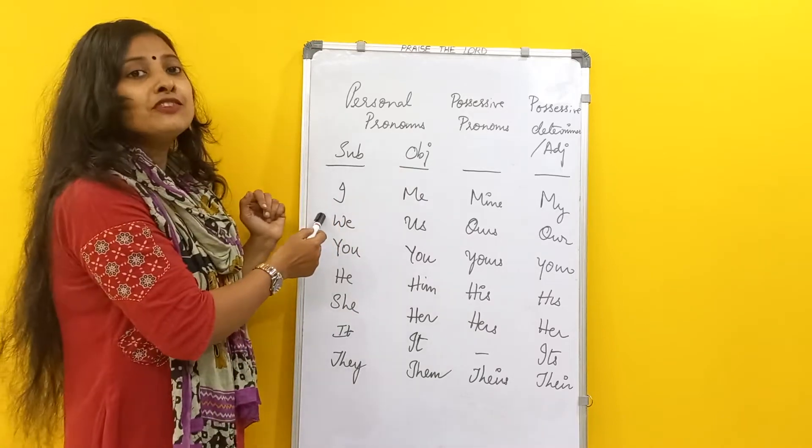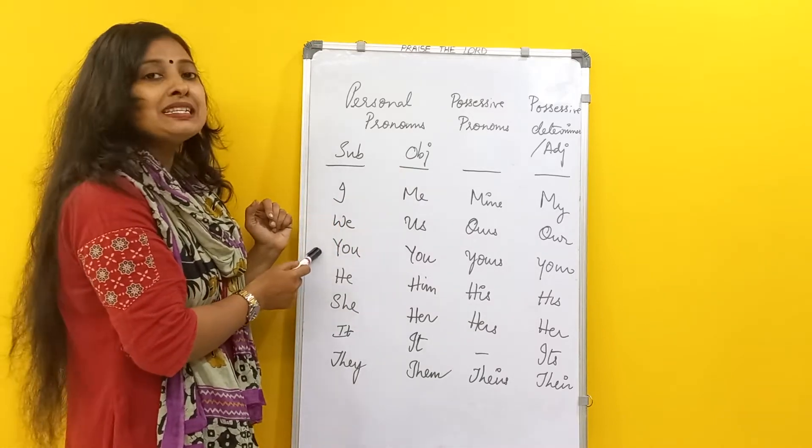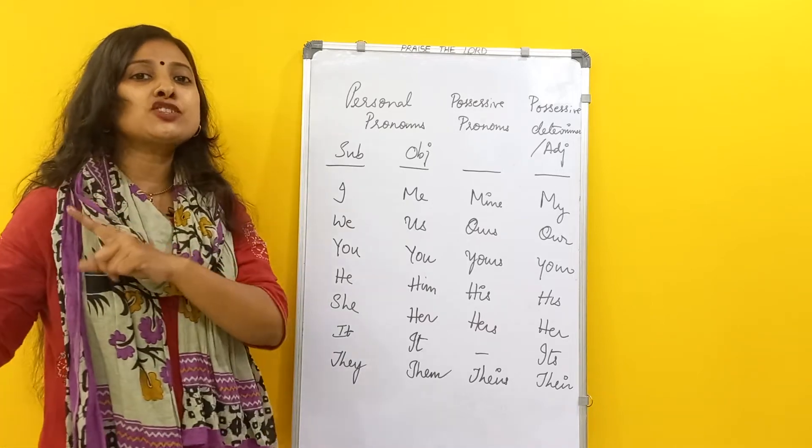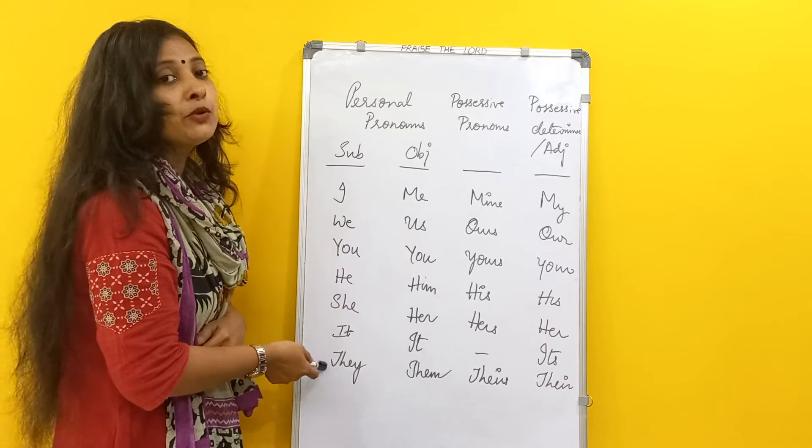The first person singular is I, first person plural is we, second person singular is you and plural is also you, and coming to third person it is he, she, it, and the plural is they.